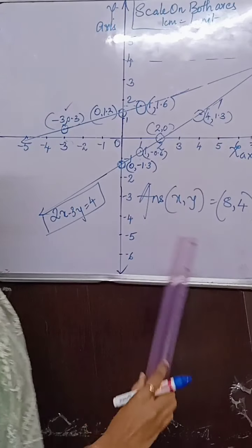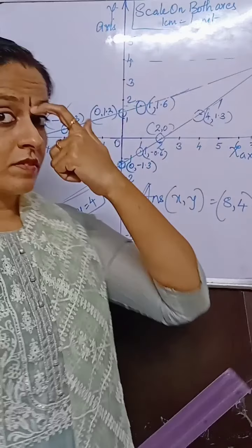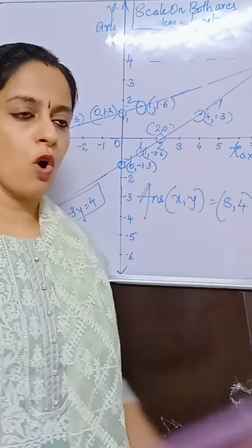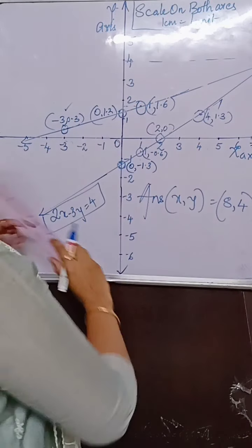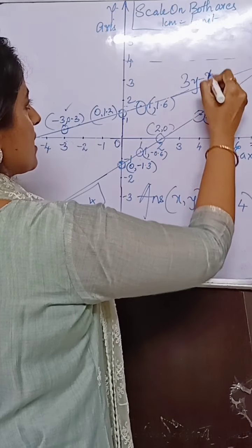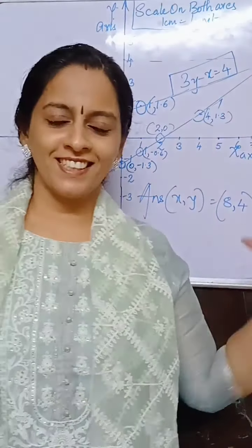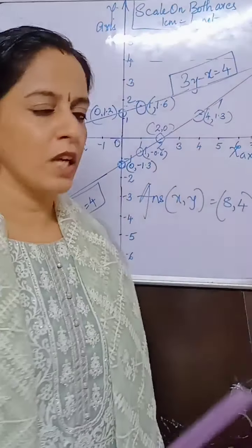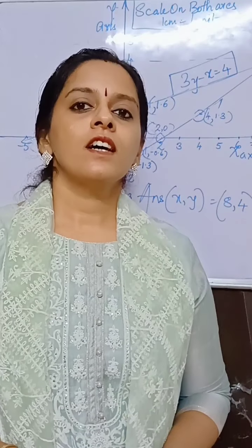So out of four ordered pairs, if anyone goes wrong, go for the other three points which are in a straight line and take those. The second equation was 3y minus x is equal to 4. That is why they gave it a star mark — because these lines were difficult to intersect. But they intersected and we got the solution.